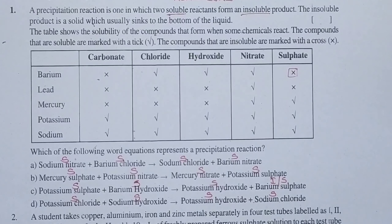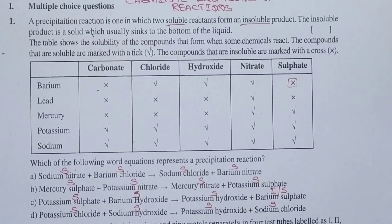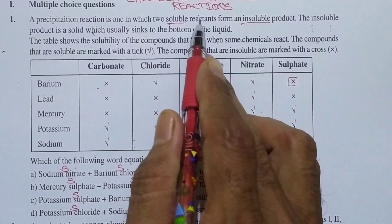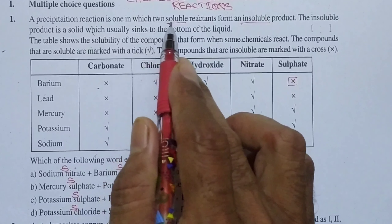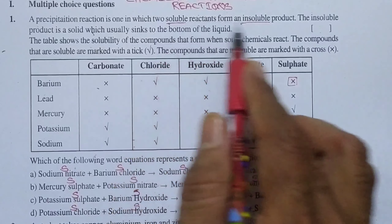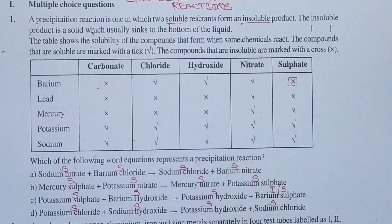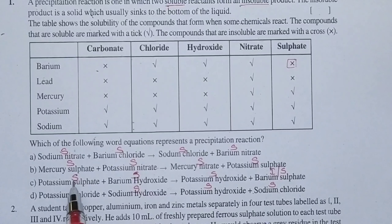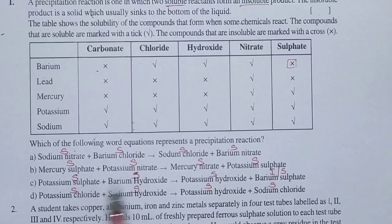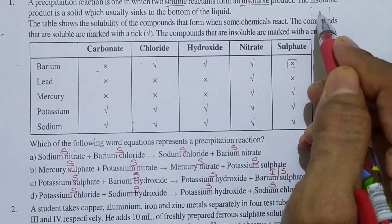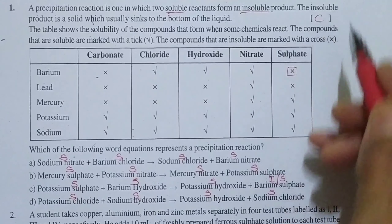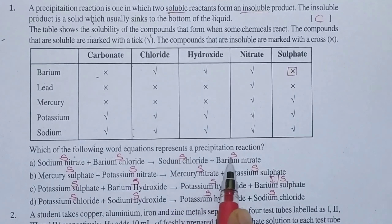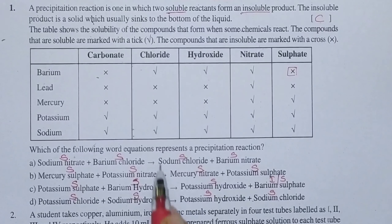According to the definition of precipitation reaction, both reactants should be soluble and the product should be insoluble. In option C, the reactants are soluble and one of the products is insoluble. So option C is the right answer for question number 1. In the remaining options, all substances are soluble, so those options are not correct answers.